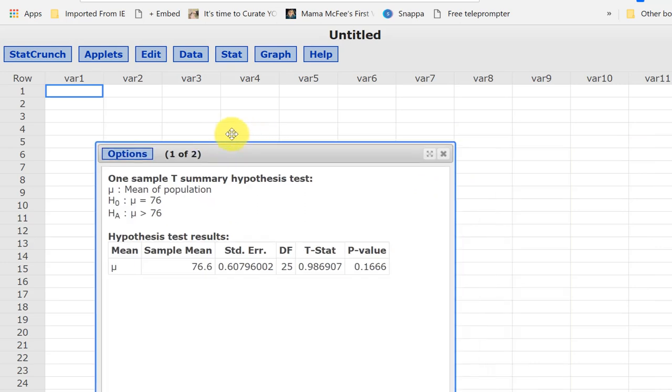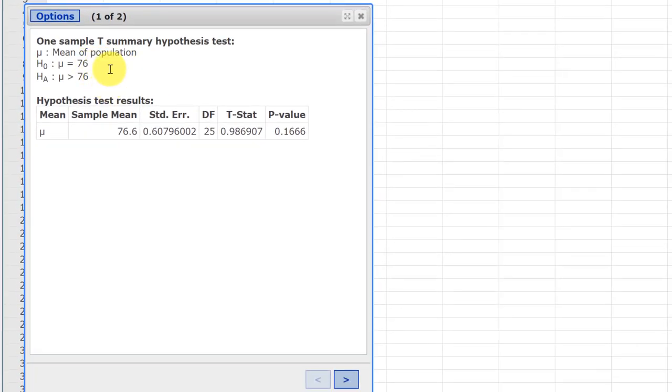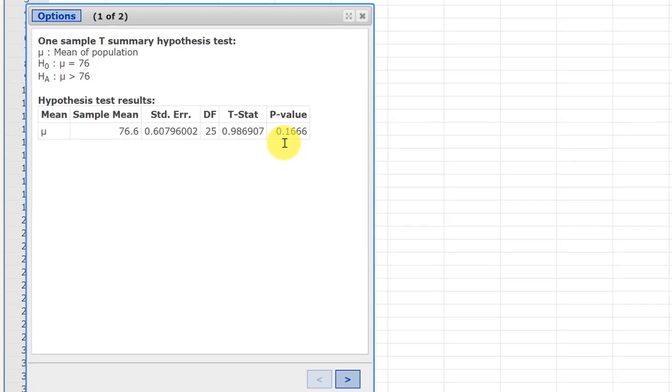And here we get our answers. I always like to double check here in summary. Yes, we were doing a single sample t-test for the population mean. The claim was the mean was greater than 76, and the null then becomes equal or less than or equal 76. We look down here. There's our sample mean, which is correct. Degrees of freedom, n minus 1 is 25. Our t-statistic, our standardized test statistic, is 0.986, and that gives us a p-value of 0.167, rounding to 3.